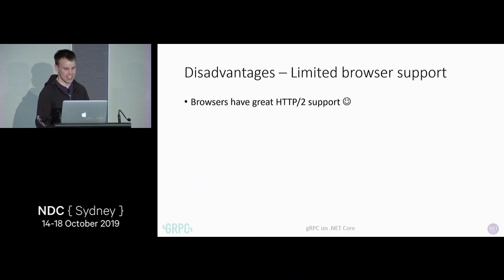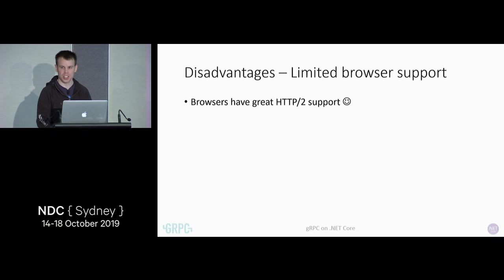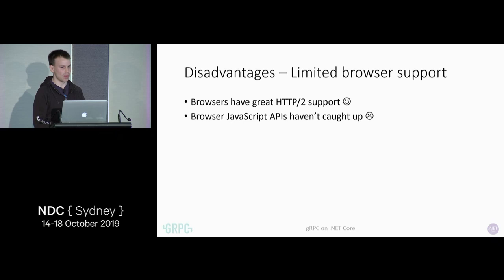The problem is browser APIs haven't caught up. XMLHttpRequest, fetch — they support HTTP 1.1, but they don't provide access to those low-level frames added in HTTP/2. Because of that, it's impossible to write a completely compatible gRPC client in the browser.